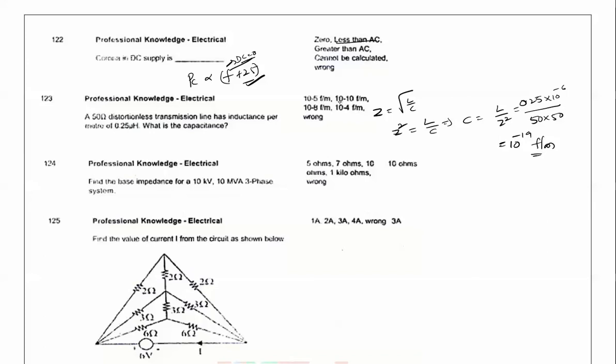Next question: The base impedance for the 10 kV and 10 MVA 3-phase system. Base impedance Zb equals Vp square divided by Sb. So 10k whole square divided by 10 MVA, that is 100 into 10 power 6 divided by 10 into 10 power 6. So 6 cancel, 10 ohms is the answer.